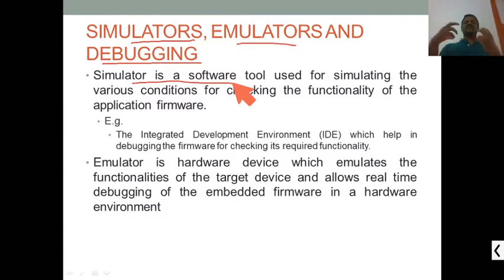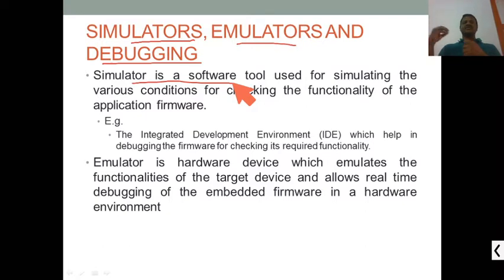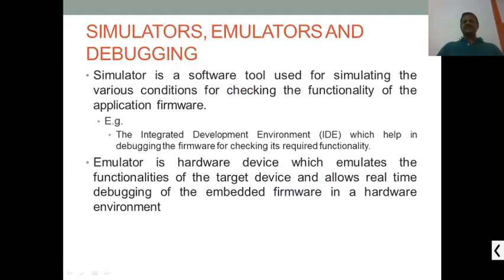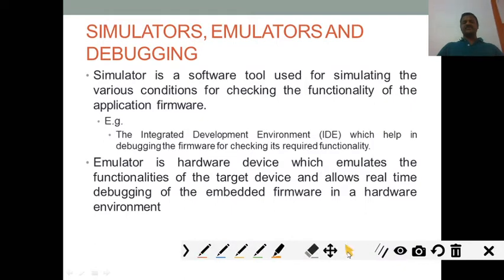If hardware already acts like hardware, why do we need additional hardware? The additional hardware — the emulator — allows customization: we can add, remove, or disconnect components. But in the case of a target board, there is no customization option. When designing any application, you need to think from both hardware and software points of view — ultimately, you have to debug your firmware, and that is the main target.